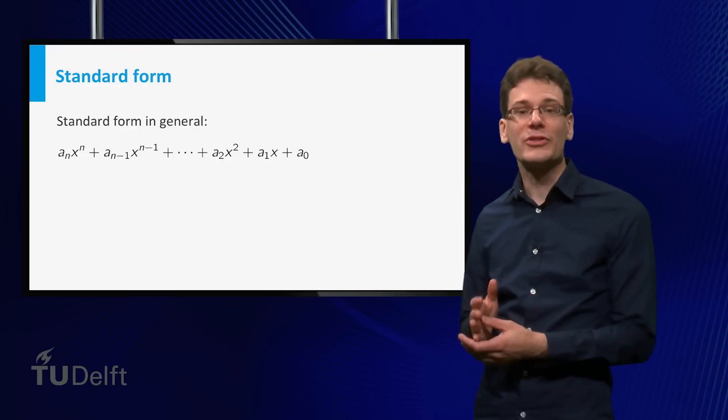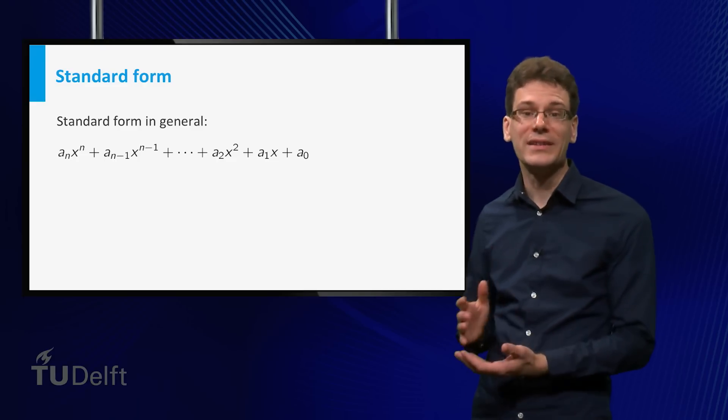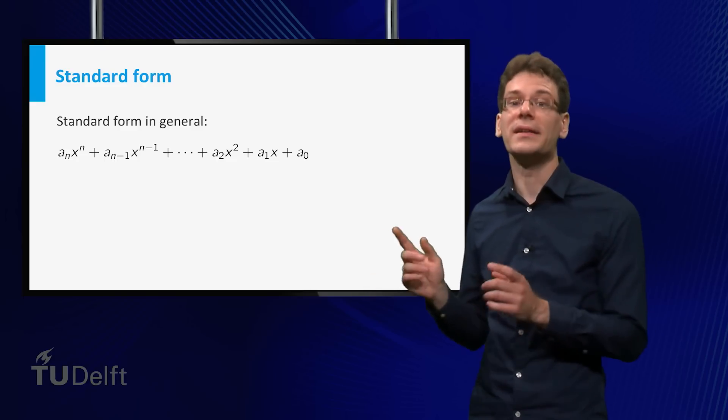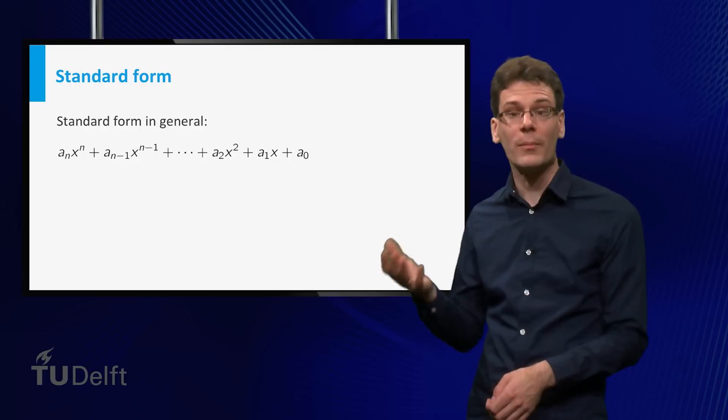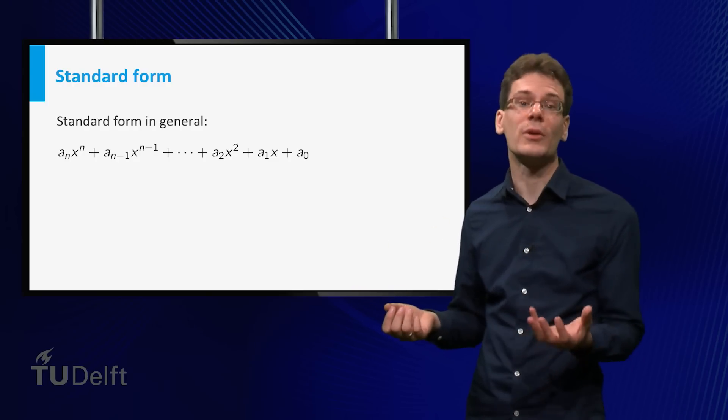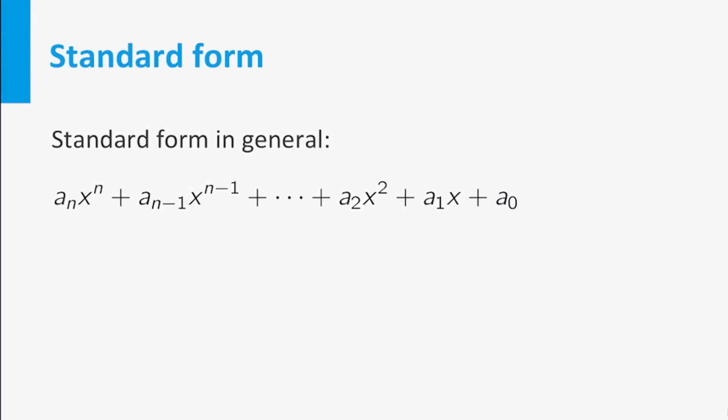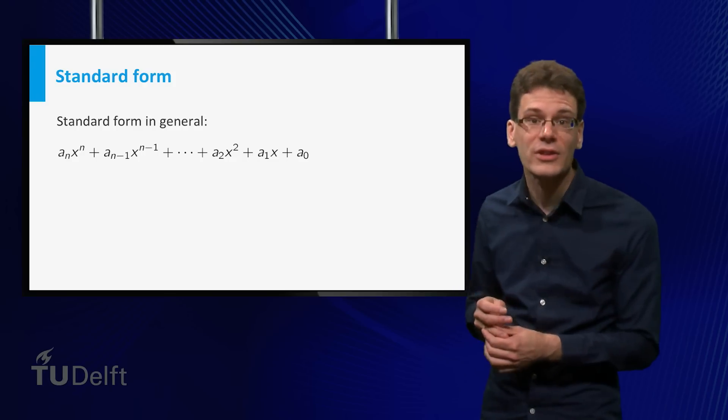In general, the standard form of a polynomial looks like this: a sum of terms, and each term is a product of a number and x raised to some integer power. The terms are ordered from high power to low. Note that the powers of x are positive integers; division by x is not allowed.